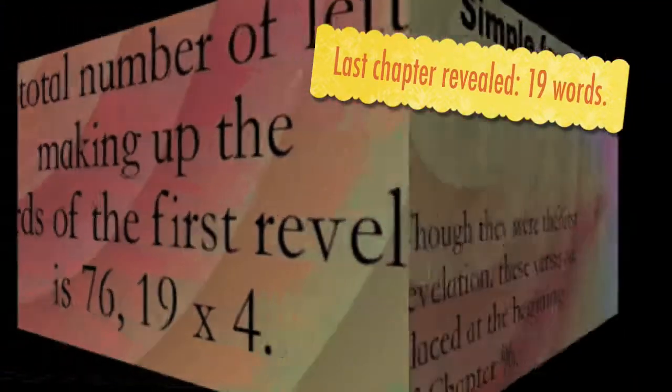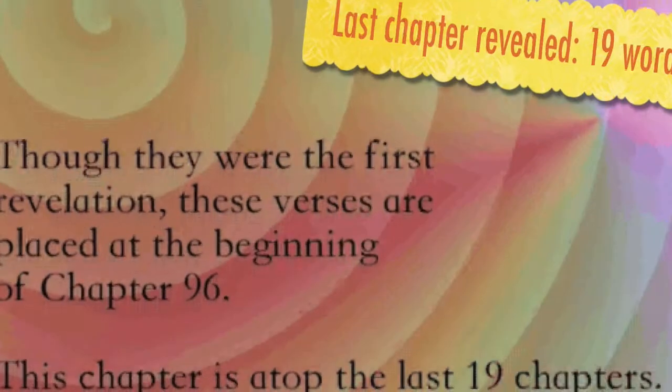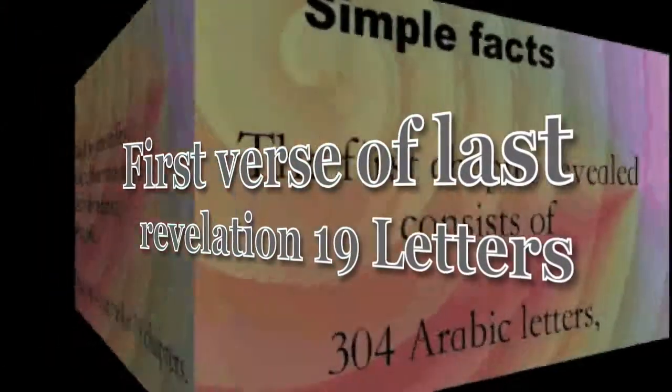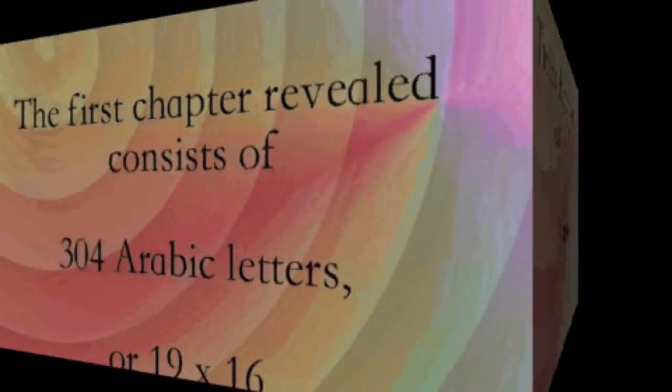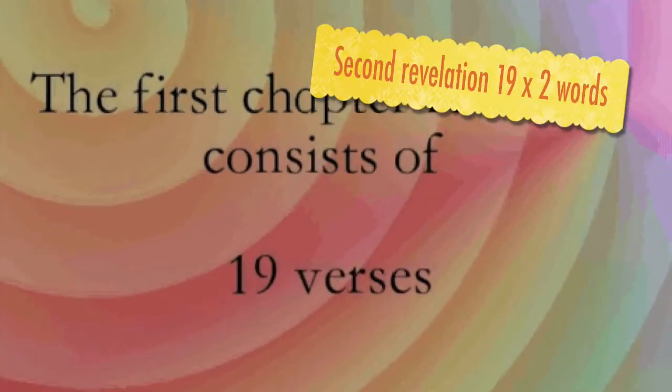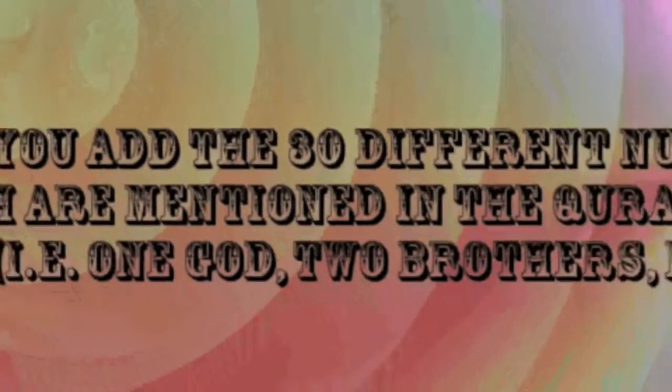8. The last chapter revealed, chapter 110 consists of 19 words. 9. First verse of last revelation consists of 19 letters. 10. Second revelation, 68:1-9, was 38 words, 19 times 2.